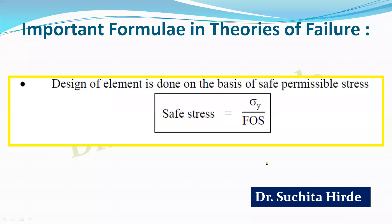Using all these theories, sometimes we have to calculate the safe permissible stress. Safe permissible stress is the yield stress divided by the factor of safety. Yield stress may be denoted by sigma_y or sigma_e, that is stress at elastic limit. Given sigma_y or sigma_e and a complex state of stress system, our aim is to calculate the factor of safety for that problem.